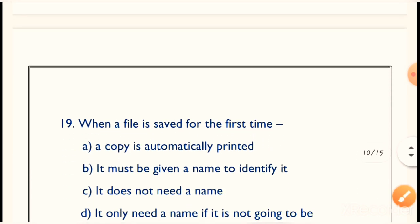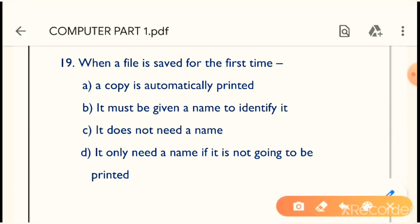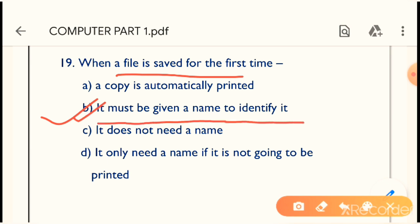Next question: When a file is saved for the first time, what happens? When we save any file for the first time, what do we do? Option B is the correct answer — it must be given a name to identify it.